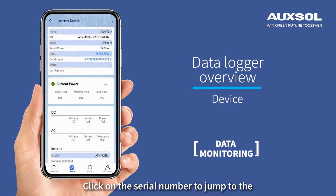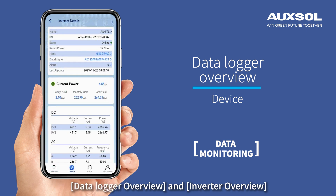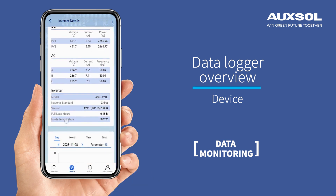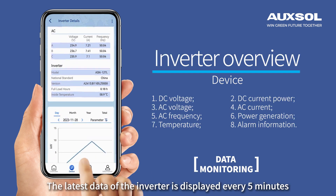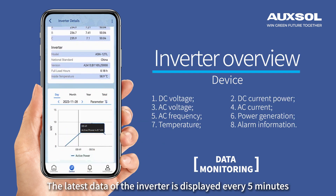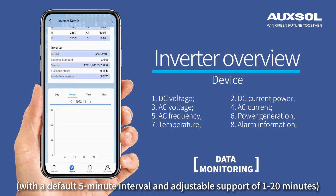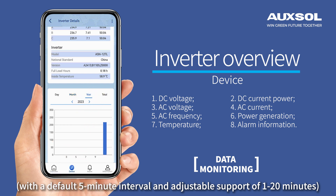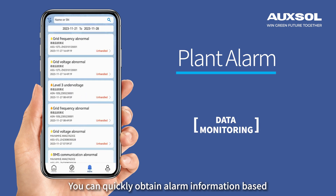Click on the serial number to jump to the data logger overview and inverter overview. The latest data of the inverter is displayed every five minutes, with a default five-minute interval that is adjustable, supporting 1 to 20 minutes.